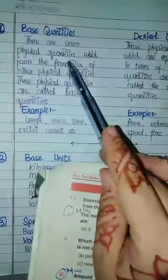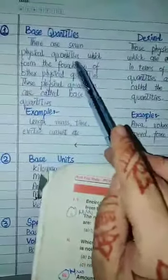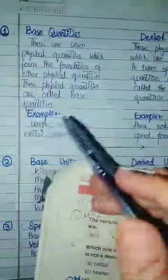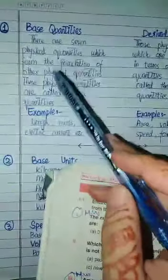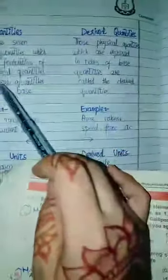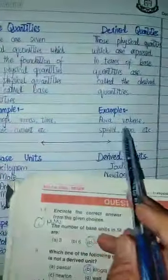We will write the base quantities which are the foundation, which are the physical quantities. Then derived quantities which are obtained from base quantities. And examples include area, volume, speed, and force.